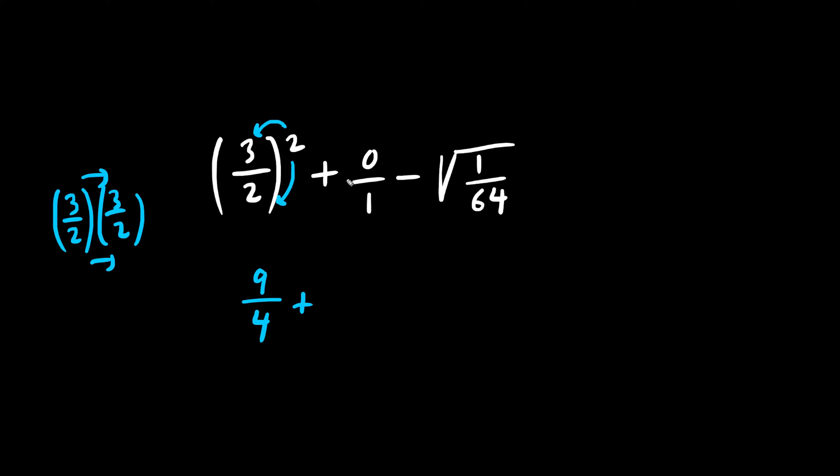Now we have zero divided by a number. Zero divided by anything is just zero. If you have zero cookies and you share it with one person yourself, I'm sorry, you still have zero cookies.